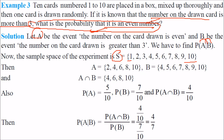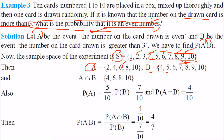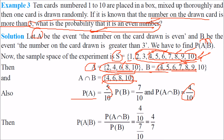A = {2, 4, 6, 8, 10} and B = {4, 5, 6, 7, 8, 9, 10}. A∩B = {4, 6, 8, 10}. So P(A) = 5/10, P(B) = 7/10, P(A∩B) = 4/10. P(A|B) = P(A∩B) / P(B) = (4/10) / (7/10) = 4/7.